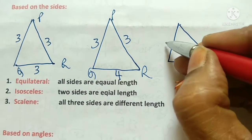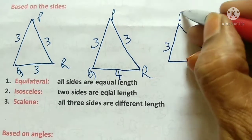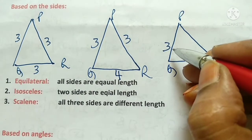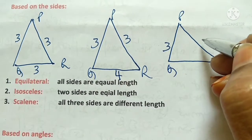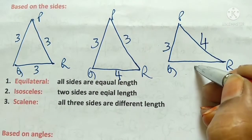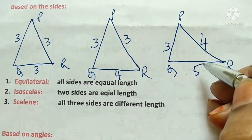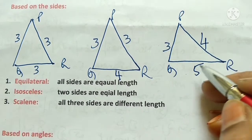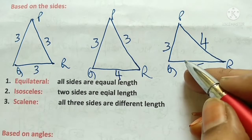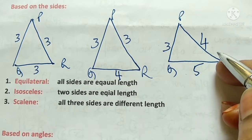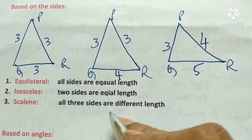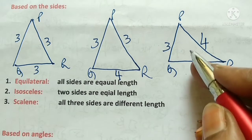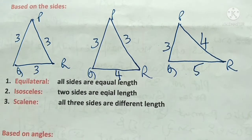For the third type: this side is 3 centimeters, this is 4 centimeters, and this is 5 centimeters. The length of all three sides is different — all three sides have different lengths. We call this a scalene triangle.